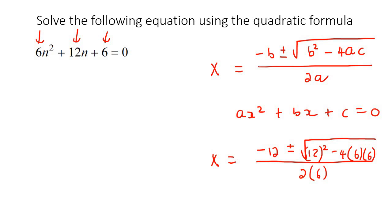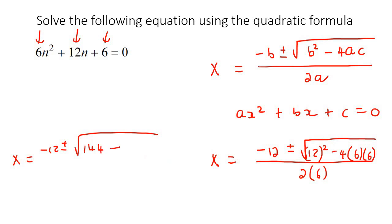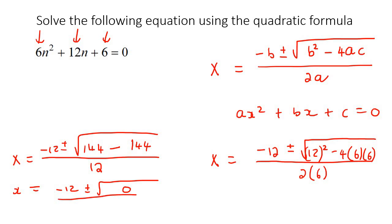Each teacher is different. Your teacher might just say go plug that on the calculator. But some teachers are really serious about this and they want you to simplify even further before putting it on the calculator. So they would say x equals negative 12, plus or minus the square root of 144, because that's what 12 squared is. And then 4 times 6 is 24, and 24 times 6 is also 144, and then dividing that by 12. Then x equals minus 12 plus or minus the square root of 0 over 12, giving us negative 12 plus or minus 0 over 12. Plus or minus 0 just cancels out, so the answer is negative 12 over 12, which is negative 1.